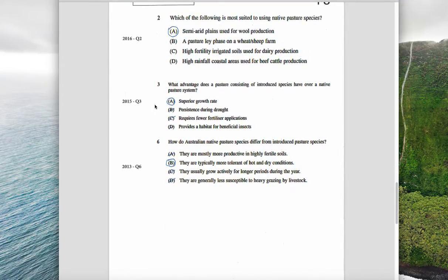2015: What advantage does a pasture consisting of introduced species have over a native pasture system? Introduced species don't persist very well during drought, they require more fertilizer, potentially provide habitat for beneficial insects is not really relevant, but they have a superior growth rate.